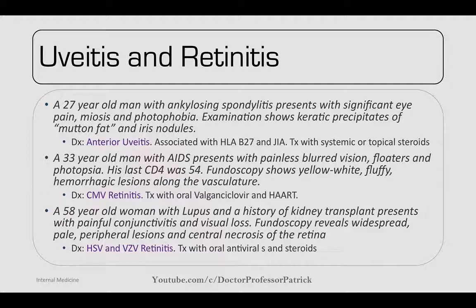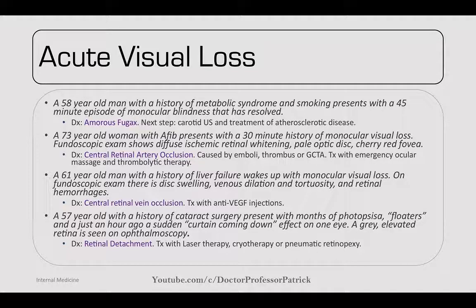A 54-year-old woman with lupus and a history of kidney transplant presents with painful conjunctivitis and vision loss. Fundoscopy reveals widespread pale peripheral lesions and central necrosis of the retina — HSV or VZV retinitis. Treat with oral antivirals and steroids. A 58-year-old man with metabolic syndrome and smoking history presents with a 45-minute episode of monocular blindness that has resolved. Diagnosis is amaurosis fugax — a TIA of the ophthalmic artery. Next best step: carotid ultrasound and treatment of atherosclerotic disease.